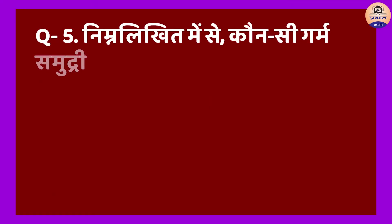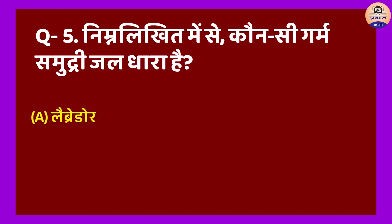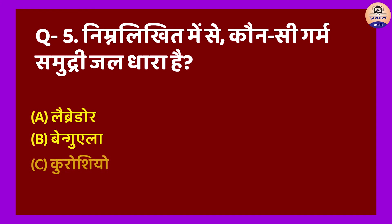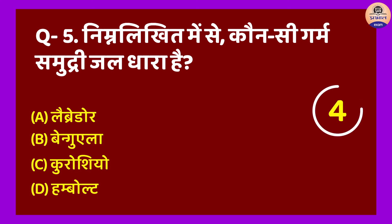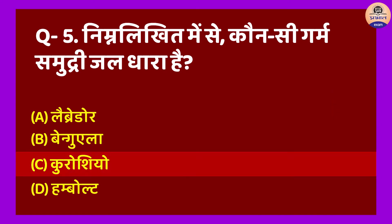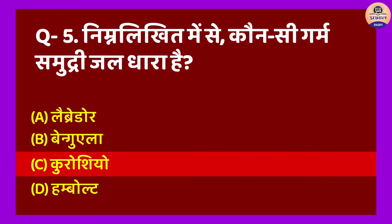Question No. 5: Nimnlikhit mein se kaun si garm samudri jaldhaara hai? A. Labrador, B. Benguela, C. Kuroshio, D. Humboldt. Sahi jawab hoga Option C. Kuroshio ki dhara ek garm jaldhaara hai. Iska maarg prabhav Uttari China Sagar ke tat, Korea tat evam sampoorn Japan Sagar taton ke liye evam Purvi Japan ke tat ko vishesh ushna banakar wahan ke nivasiyon ki karyakshamata mein nirantar vriddhi karta rehta hai.